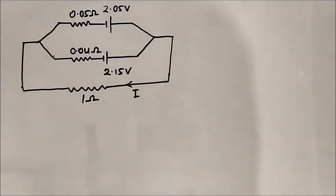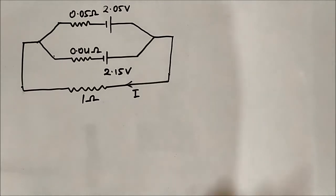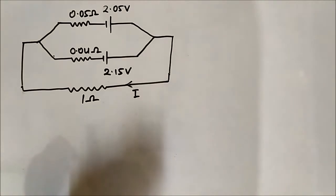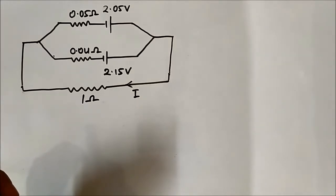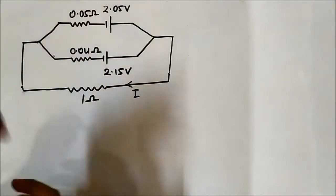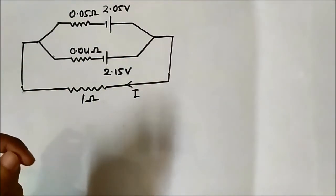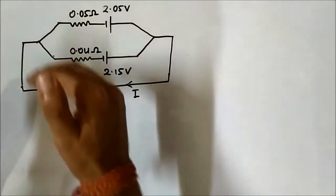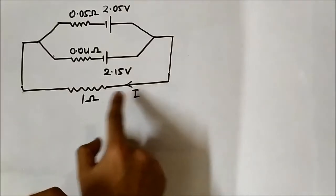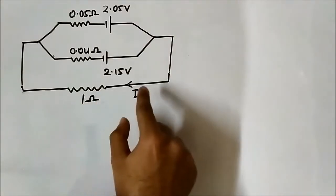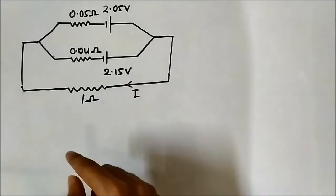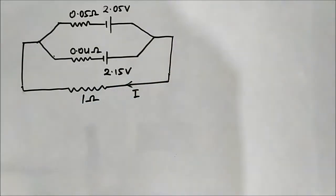Hello friends, welcome to Engineering Tutorial. This is the third question we are going to discuss on the application of superposition theorem. We have already discussed two questions. This is another circuit — it consists of two DC voltage sources with values 2.05 volt and 2.15 volt, with two resistors of 0.05 ohm and 0.04 ohm respectively, and another 1 ohm resistor at the bottom. We have to determine the current flowing through this 1 ohm resistor; the direction is from right to left.